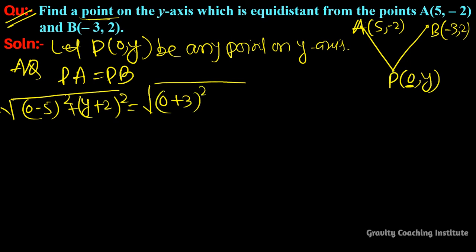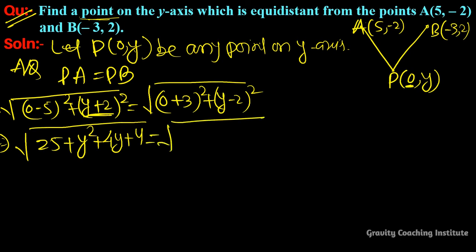So we get √[25 + y² + 4y + 4] using the (a+b)² identity, which equals √[y² + 4y + 29]. And here we use 9 + y² - 4y + 4, using the identity, which gives √[y² - 4y + 13].